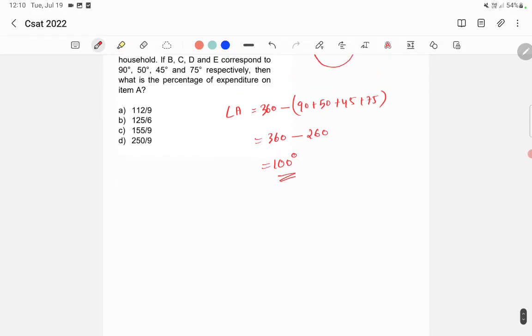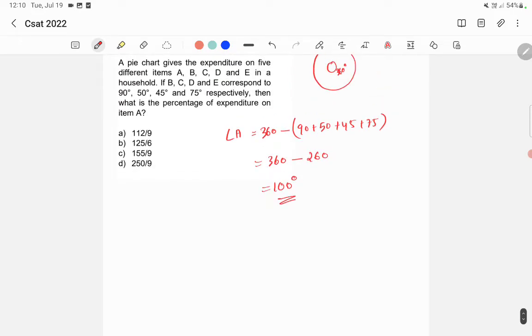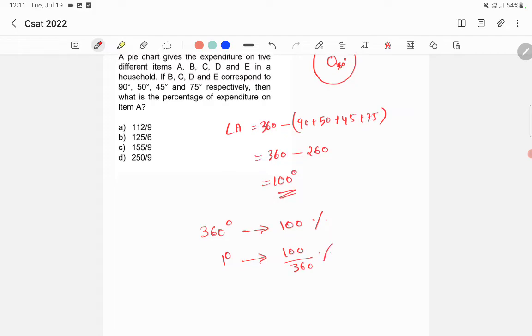So we know that total, that is 100 percentage expenditure. So if it is 360 degree, it corresponds to 100 percentage of expenditure. So if it is 1 degree, it corresponds to 100 by 360 percentage.